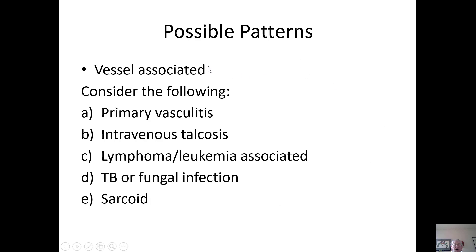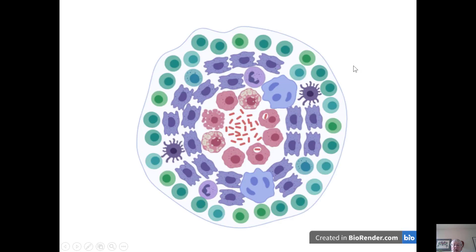If you find granulomata which are predominantly vessel-associated, consider a primary vasculitis, intravenous talcosis, malignancies, infections, and sarcoid. Thank you for listening to part one of the sections on granulomatous inflammation.